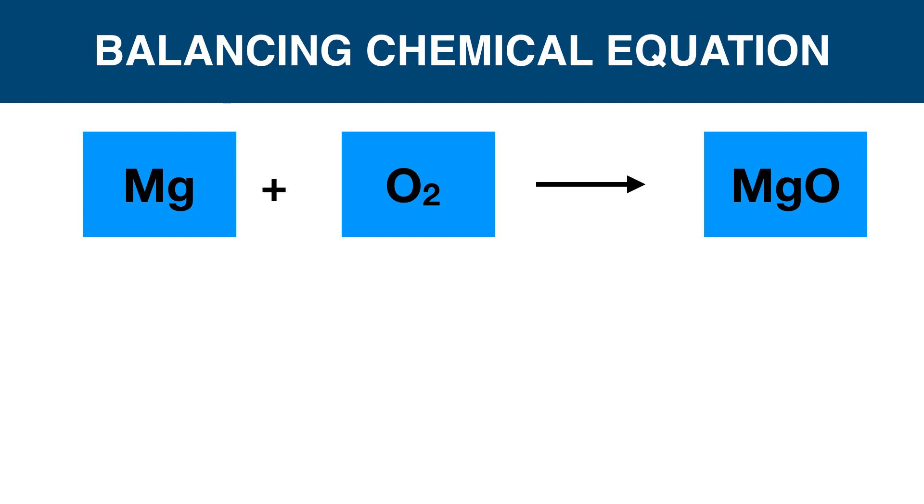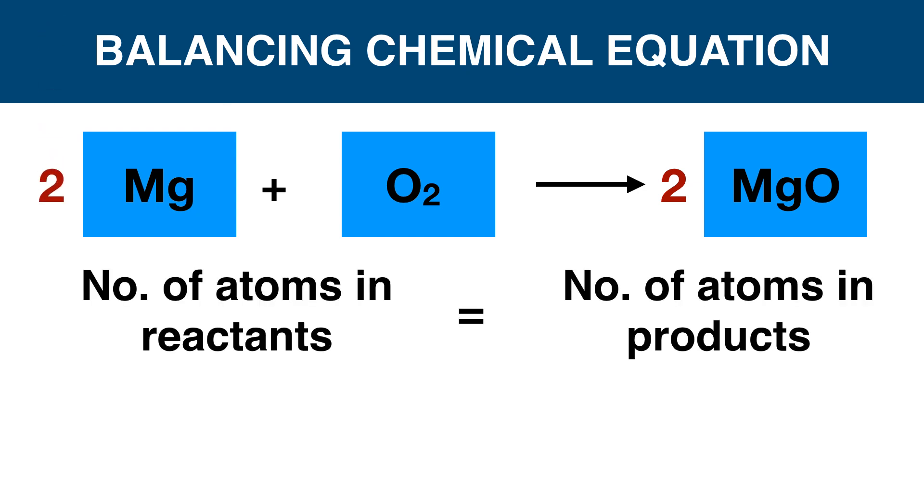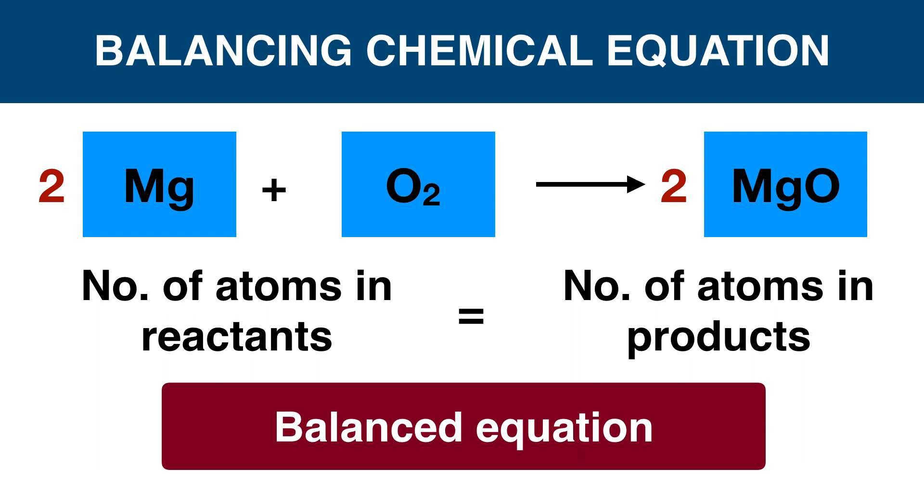Magnesium has the same number of atoms in reactant and product, but in the case of oxygen we need to balance. There are two oxygen atoms in the reactant side and one atom in the product side, so we put 2 along with MgO. Now the number of oxygen atoms is equal in both sides. On adding 2 beside MgO, the number of magnesium atoms is changed. For balancing these, we put 2 along with magnesium. Hence the equation is balanced.